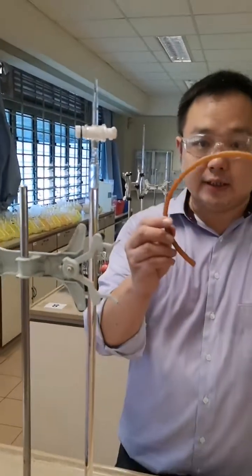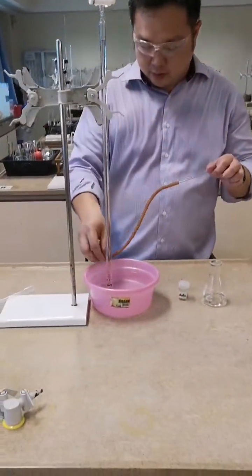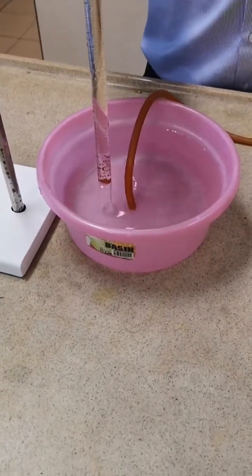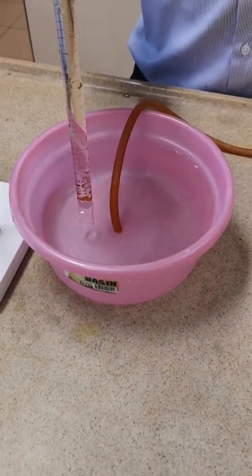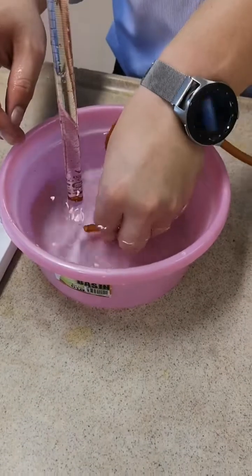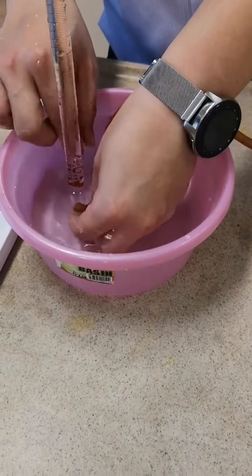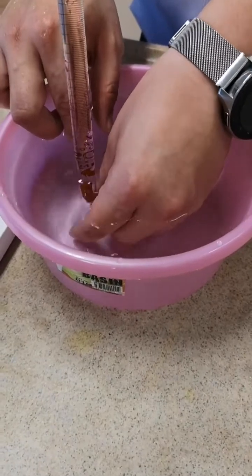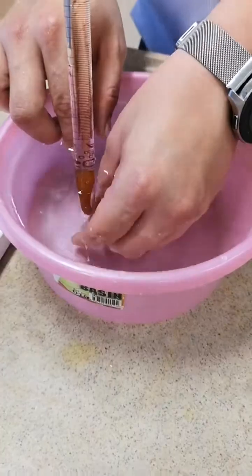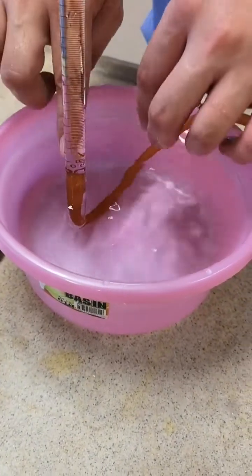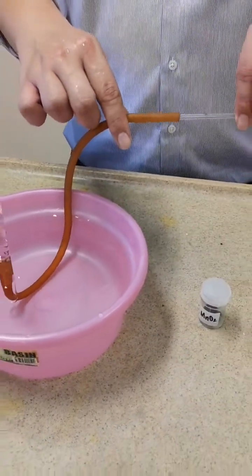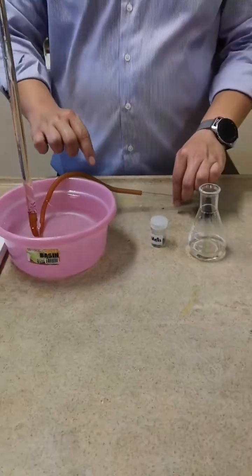Next, you will insert the delivery tube into the opening of the burette. Please take note you need to insert it sufficiently deep so that the tubing will not get dislodged later on during the experiment. While doing so, ensure that there's no kink along the rubber tubing. With that, you are ready to start the experiment.